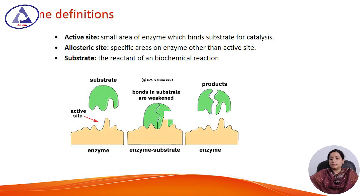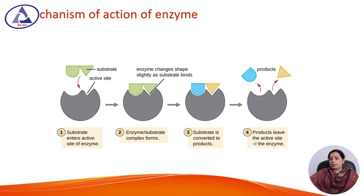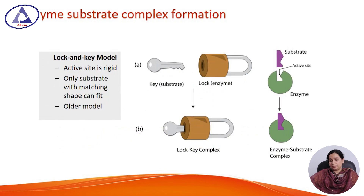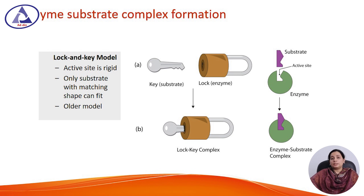Here I have shown the active site and the allosteric site. So how does an enzyme actually act? What is the mechanism of action of an enzyme? First, the substrate binds with the active site of the enzyme, then the enzyme-substrate complex is formed as shown in the picture, and the substrate is converted into product, and the product leaves the active site of the enzyme.